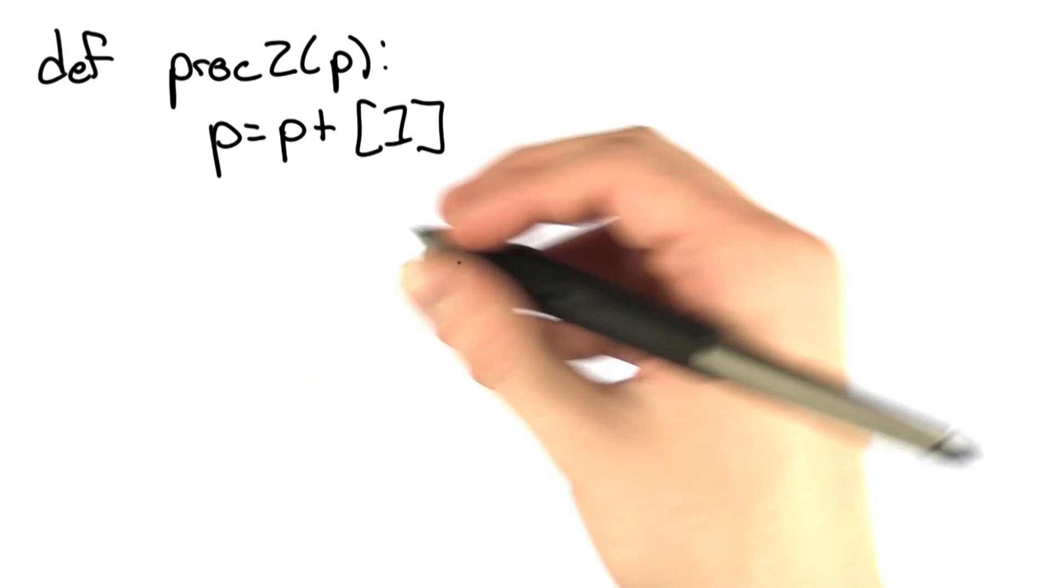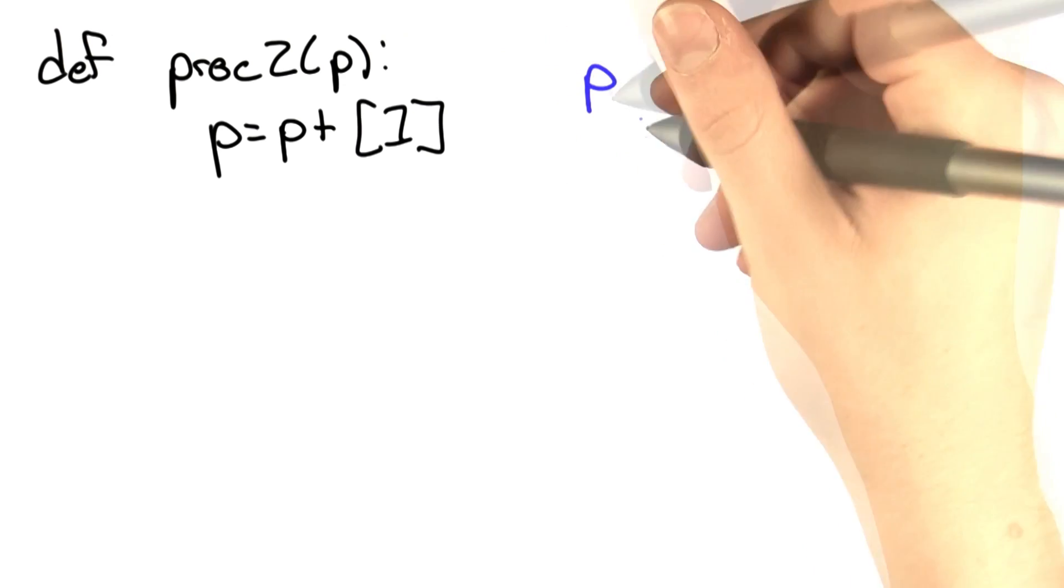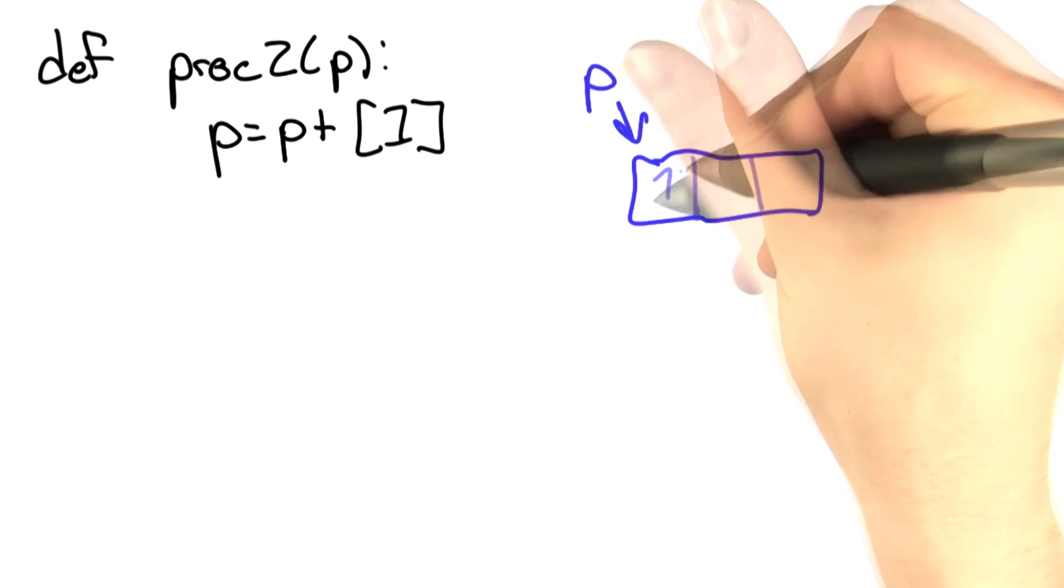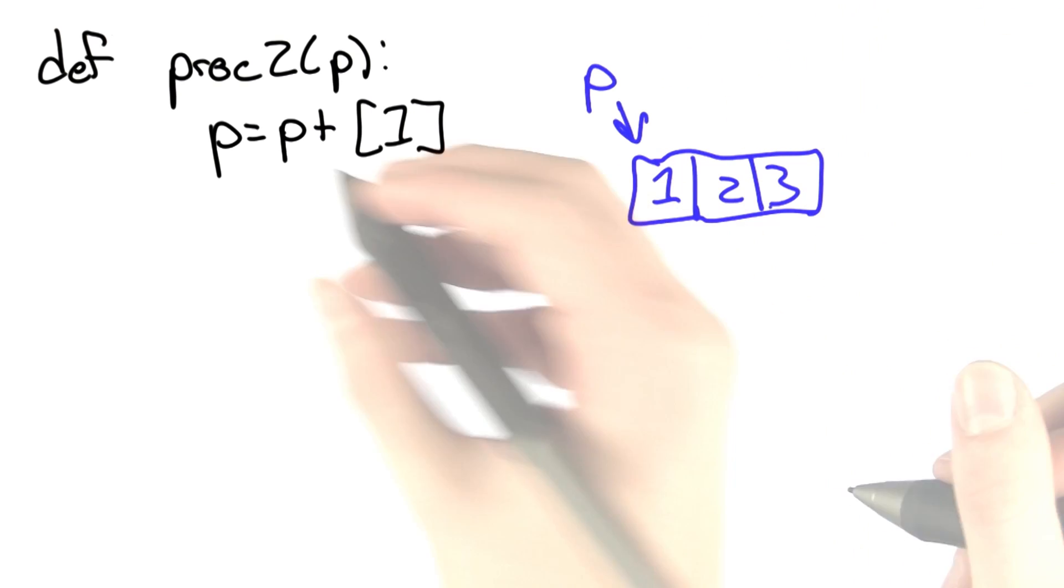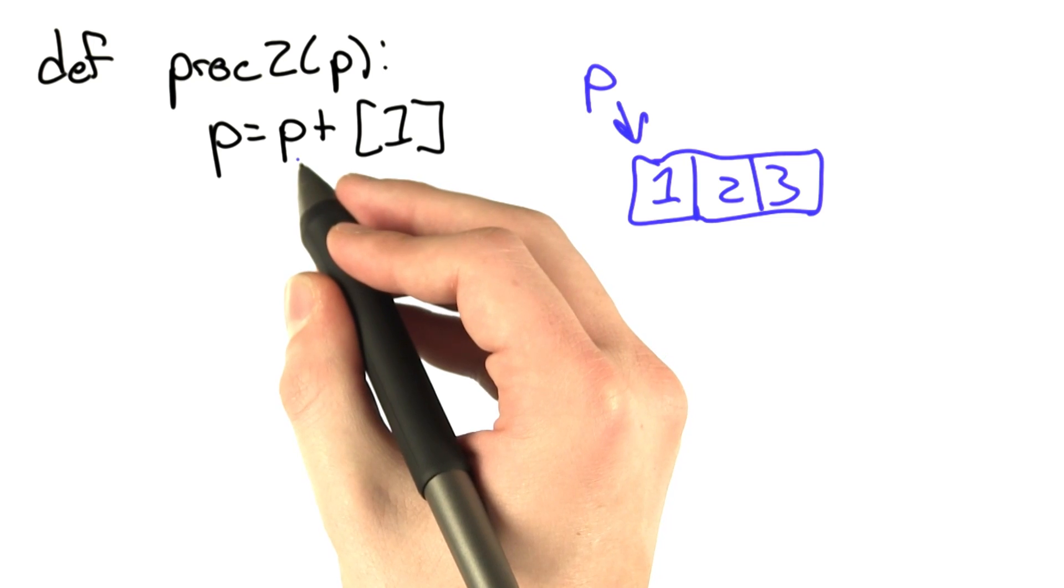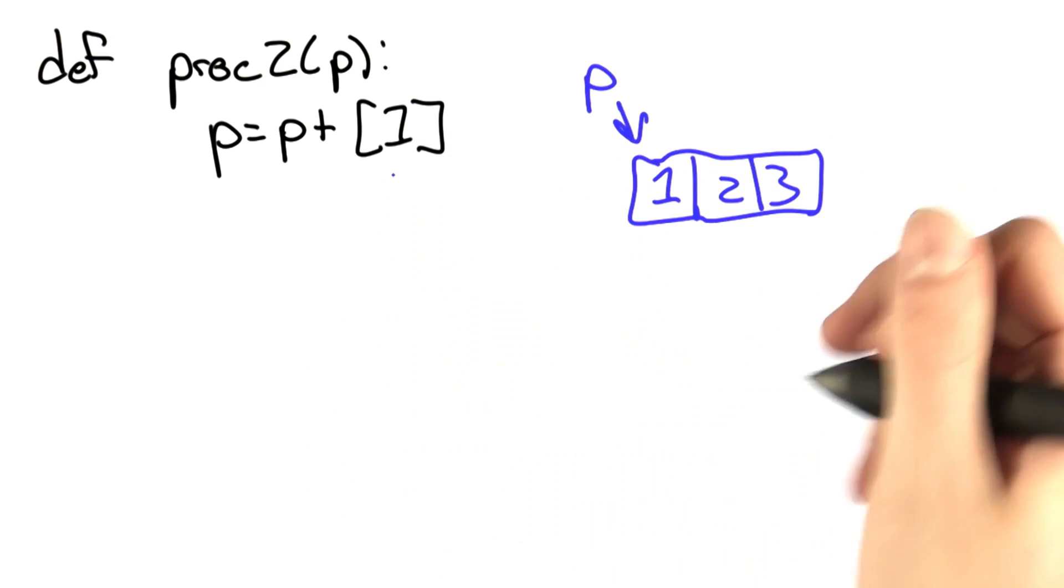This one can be a little tricky, so let's work through it. We know that p is a pointer to a list. Let's say it's 1, 2, and 3. Now we're reassigning what p points to to the original value of p, which is this, concatenated with the list 1.